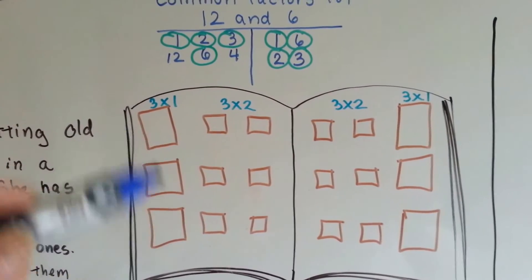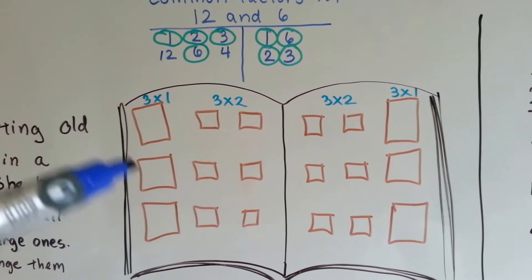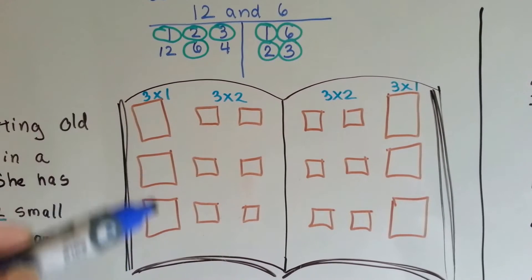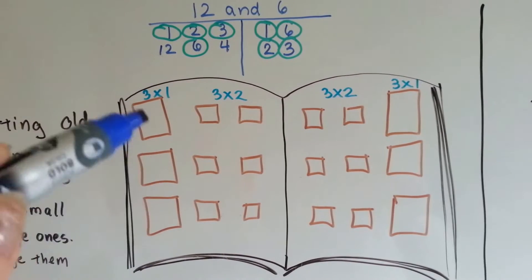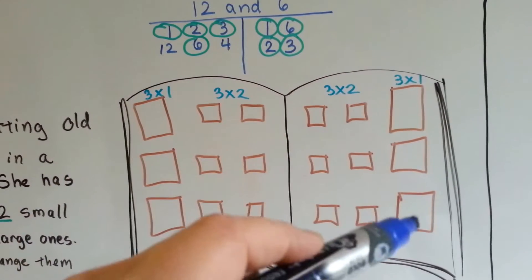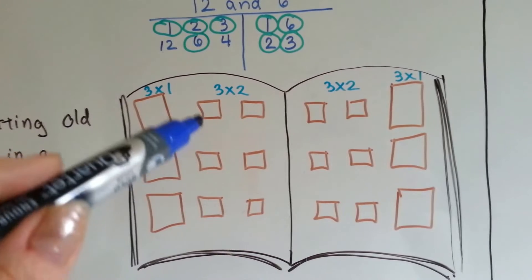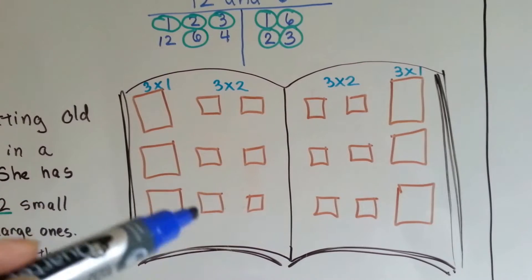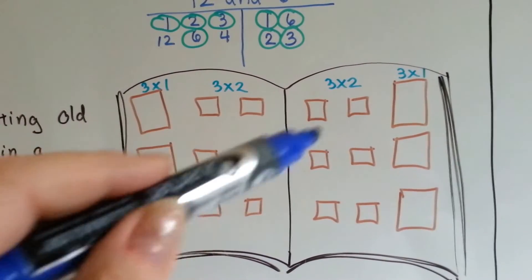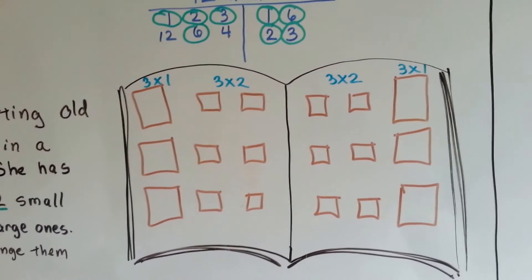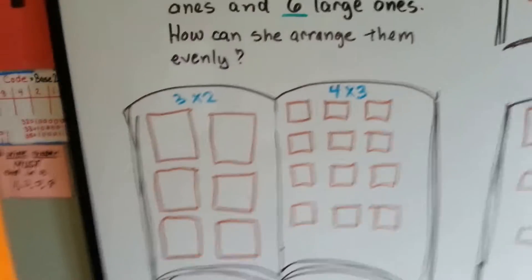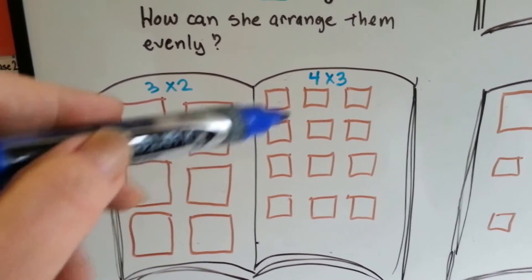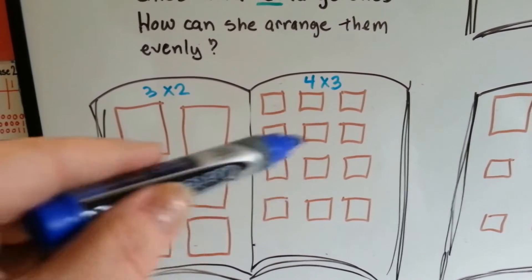She's got 6 large ones and 12 small ones. She can do 3 rows with 1 photo in each row on one side, and the same on the other — that covers her 6 large ones. Or she could do 3 rows of 2 photos, 3 times 2, and do the same on the next page so they look nice and even. She could also do 3 times 2 on one page and 4 times 3 on the other page.